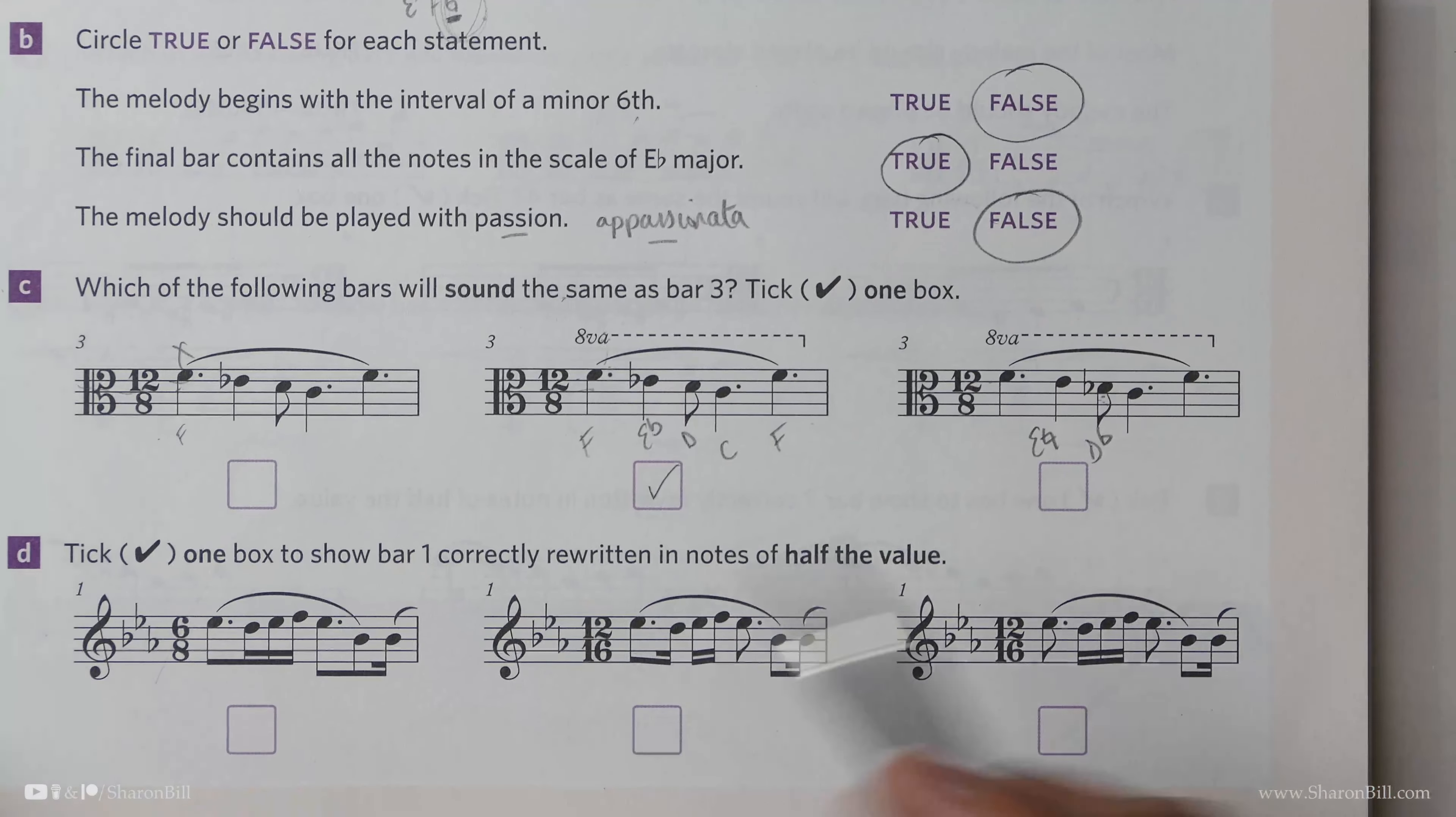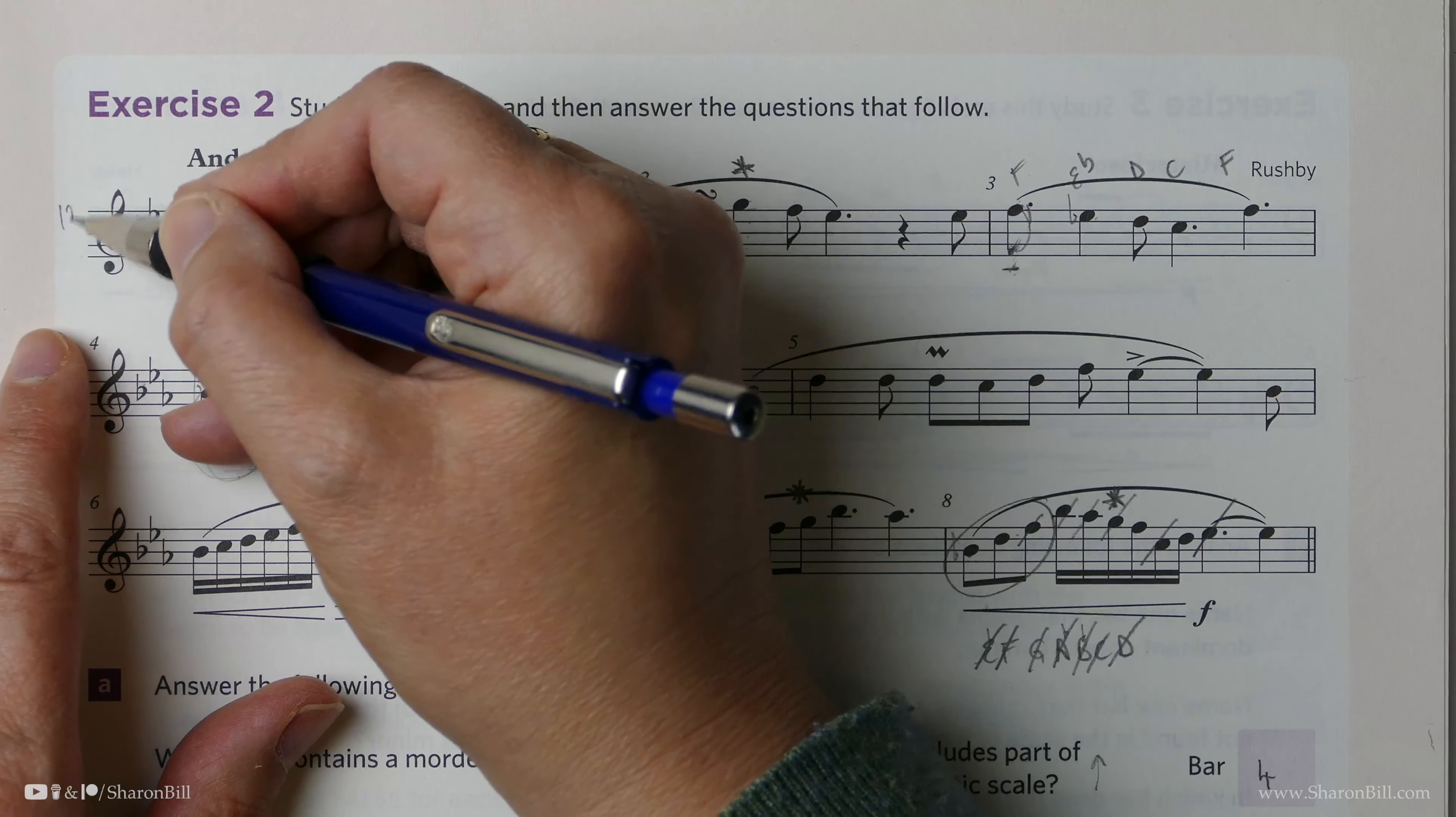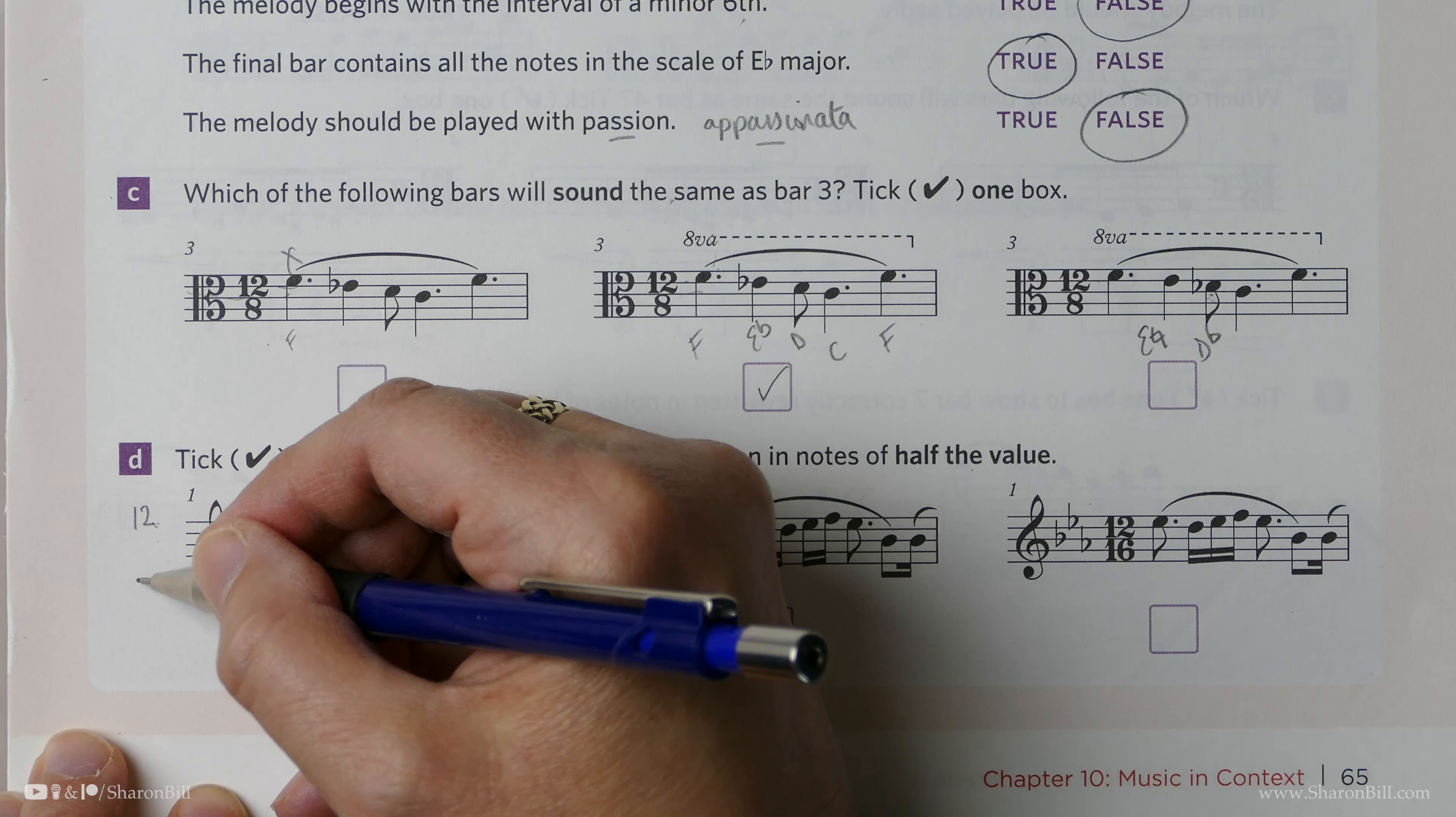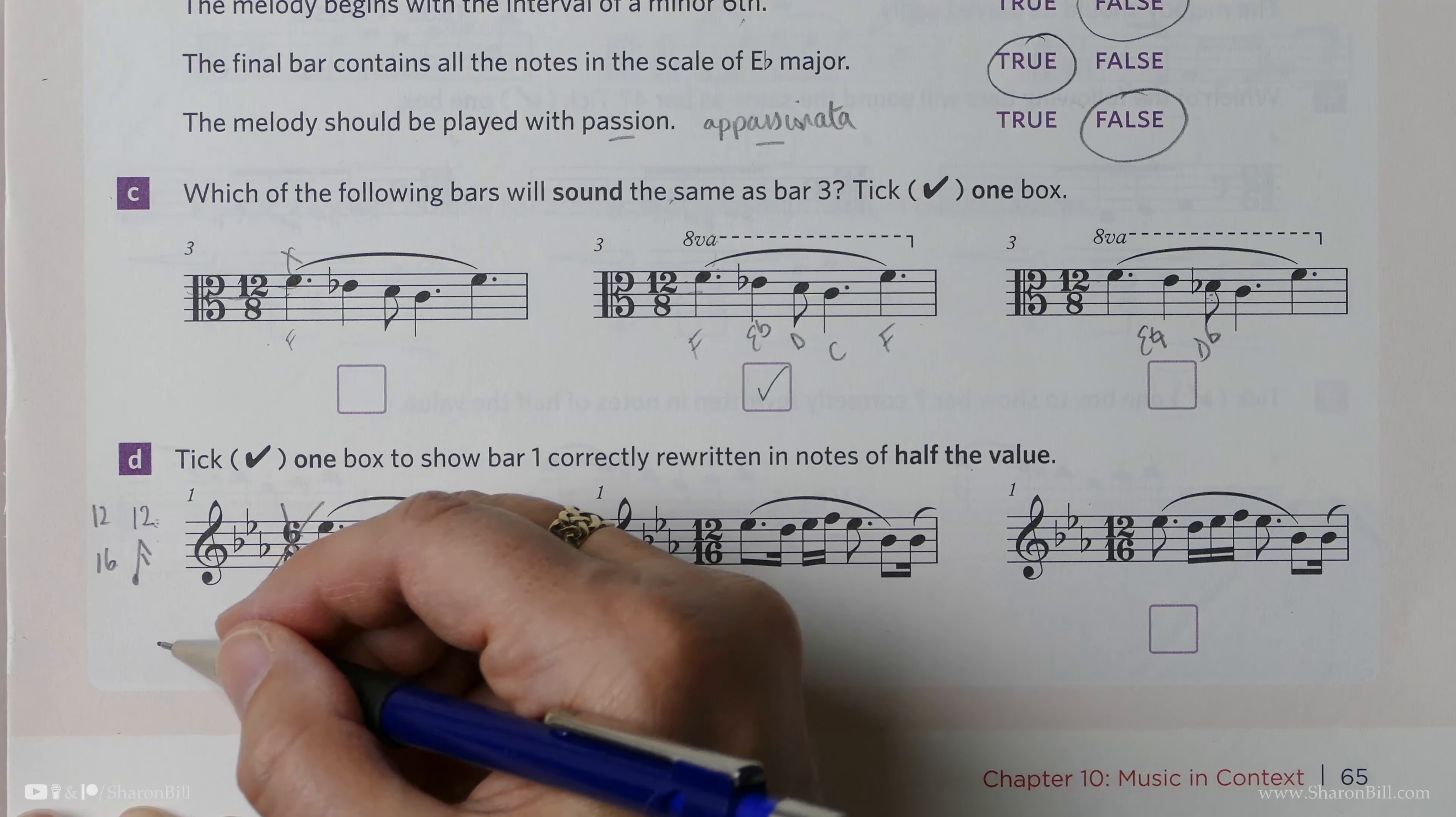Now then, on this last question, we need to show which of these represents bar 1 correctly rewritten in notes of half the value. So let's look at bar 1. So here, we are in 12/8, and so that means 12 quaver beats per bar. And what we need here to halve that, we still need to stay with 12 as our top number. We're in compound time and it needs to be quadruple. But now, to halve it, we need to be in semi-quaver beats per bar. So we need 12 over 16.